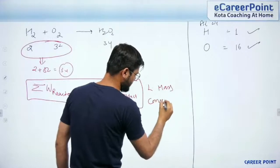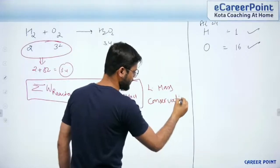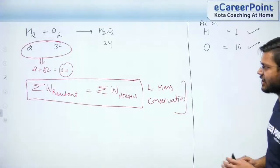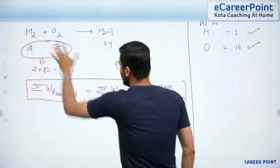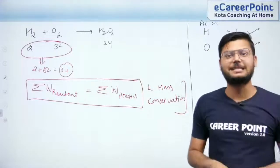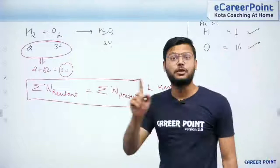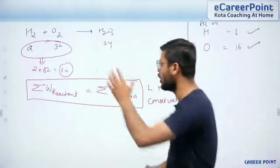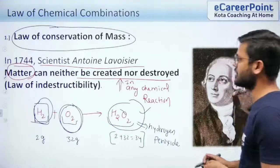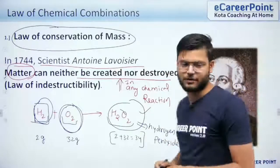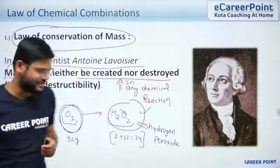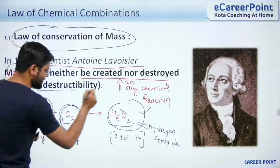This is what the law of mass conservation states. For any chemical reaction, the weight at the reactant side is equal to the product side, because mass can neither be created nor destroyed. There is no loss of mass and no gain of mass. That is the first law — the law of conservation of mass, also called the law of indestructibility.